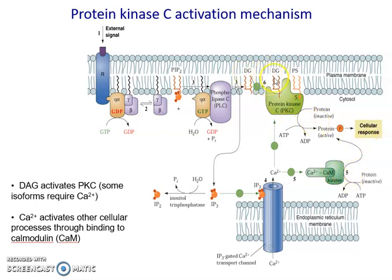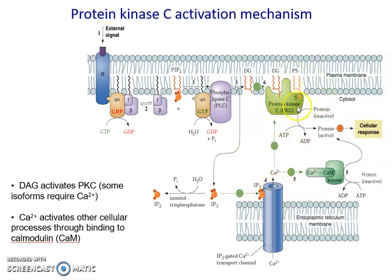With our diacylglycerol, we know that for one isoform of protein kinase C — the conventional isoform — we have activation being done by diacylglycerol, phosphatidylserine, and also this calcium that we now have within the cells at increased concentration. This will activate protein kinase C, and as all kinases do, it will phosphorylate various different things, and this can have a multitude of different effects depending on what it phosphorylates.